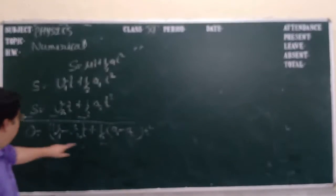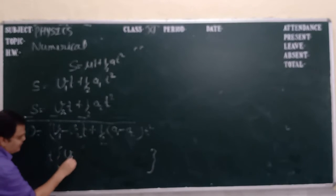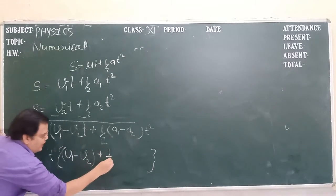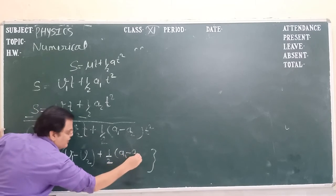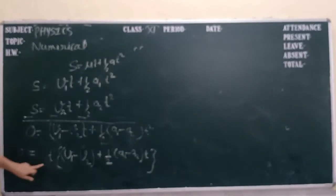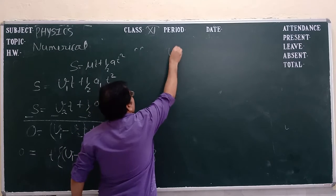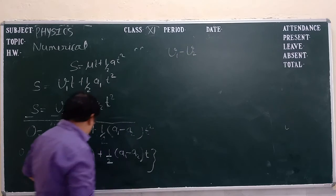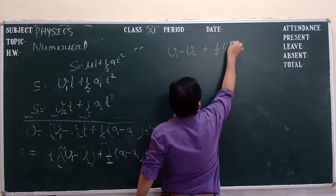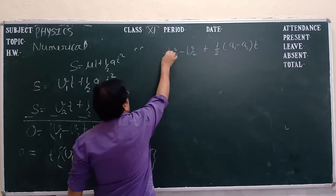Just take t out here. We are taking t common, what we get? v1 minus v2 plus 1 by 2, a1 minus a2t equal to 0. Here is 0, just transfer the t here.